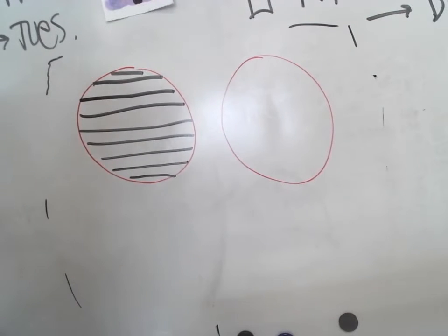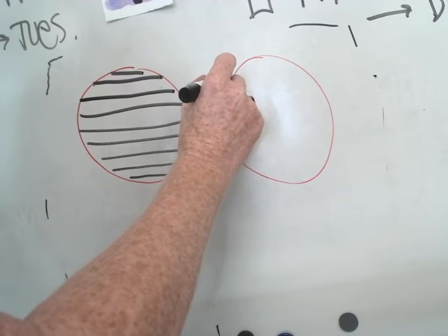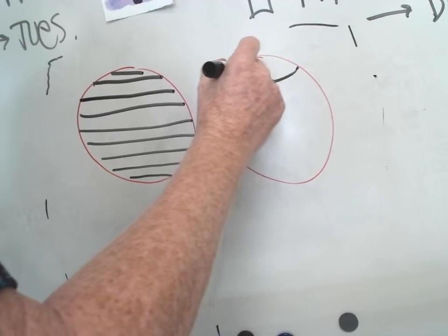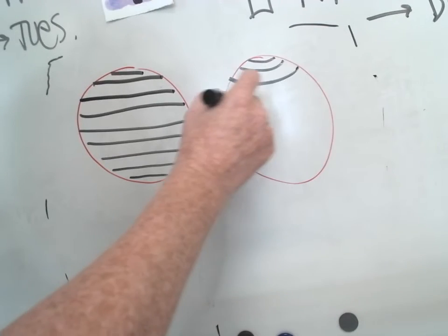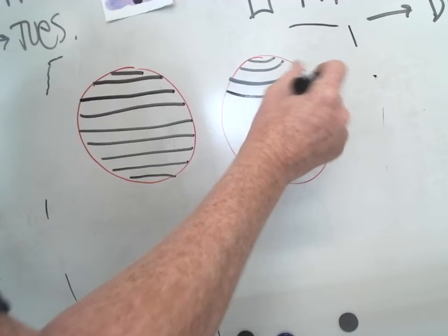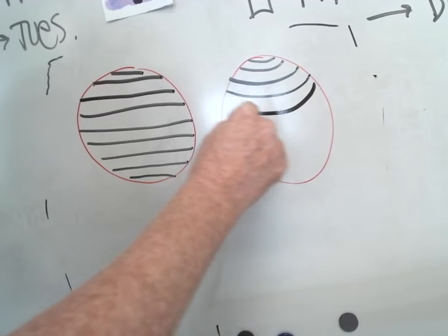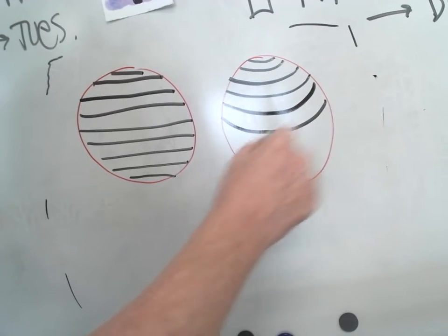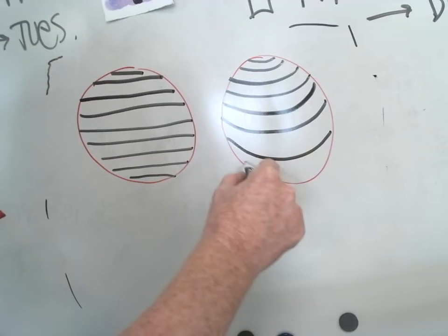What I want instead is you to curve your lines. Pretend the lines are painted on the ball—they would curve, right? They would wrap around, they would wrap around to the other side of the ball, we just can't see it.